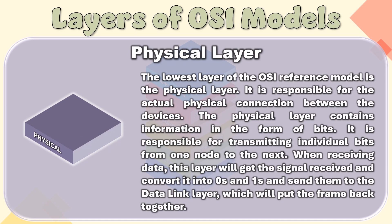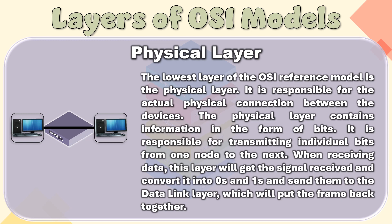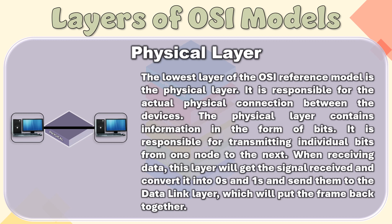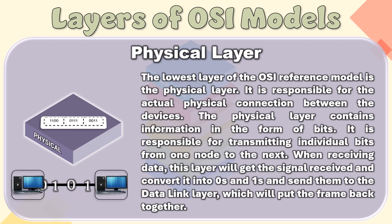Layer 1 – Physical Layer. The lowest layer of the OSI reference model is the physical layer. It is responsible for the actual physical connection between the devices. The physical layer contains information in the form of bits. It is responsible for transmitting individual bits from one node to the next.